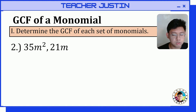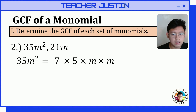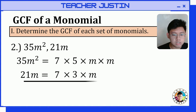The prime factors of 35m squared are 7 times 5 times m times m. Then for 21m, the prime factors are 7 times 3 times 3 times m.